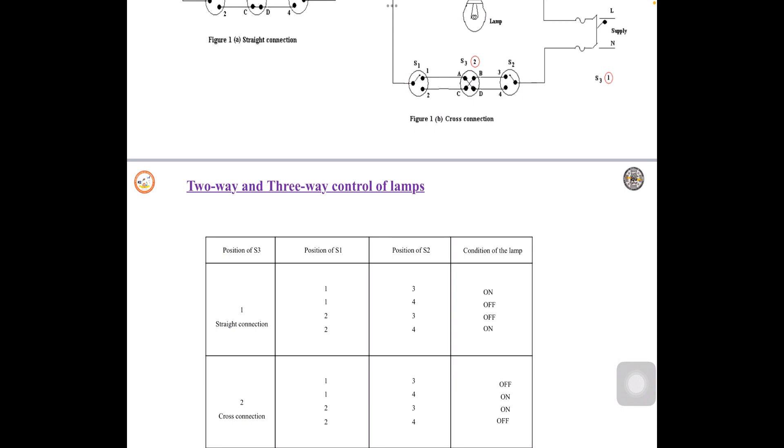Next is 2 to 3. So change the position from 1 to 2. So 2 to C, C to B, B to 3, there is an interconnection. From the other end of the S2, from the other end to neutral, so light lamp will glow.